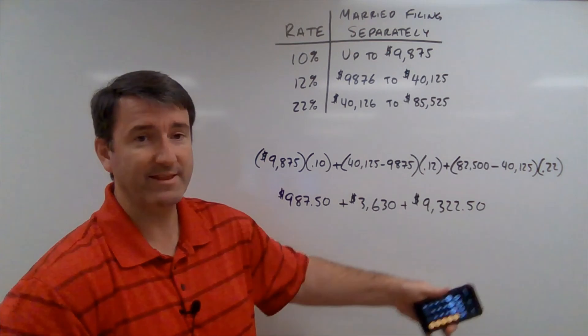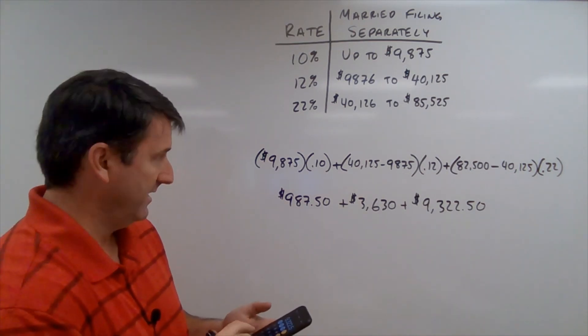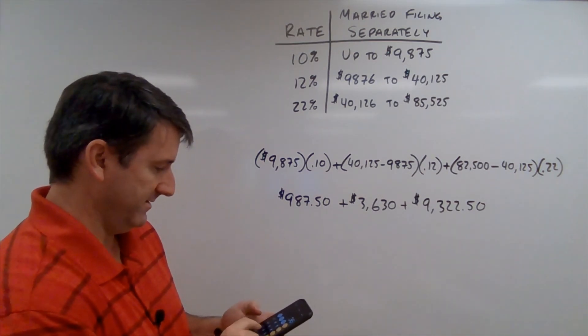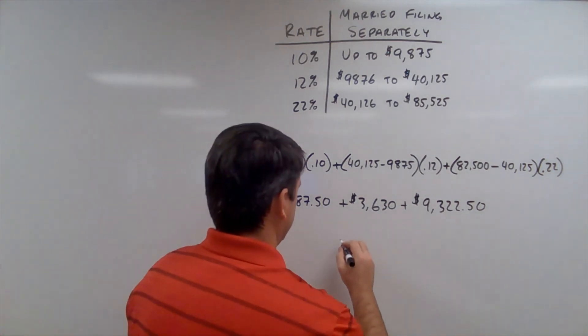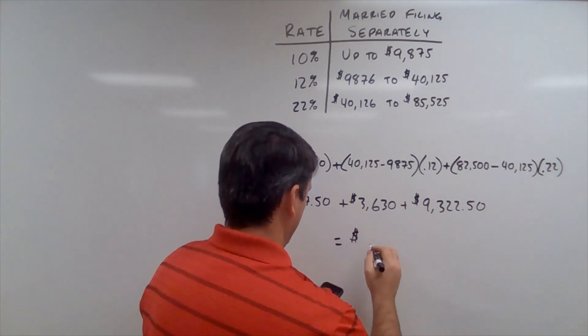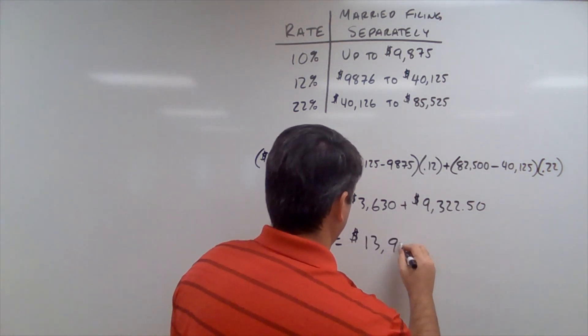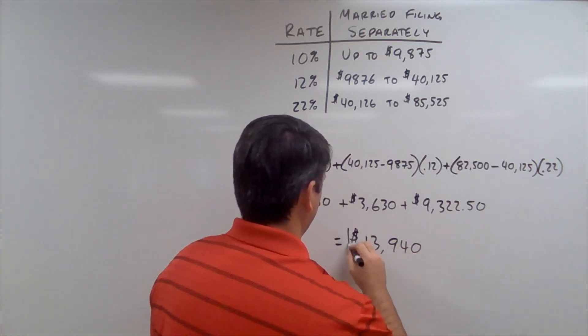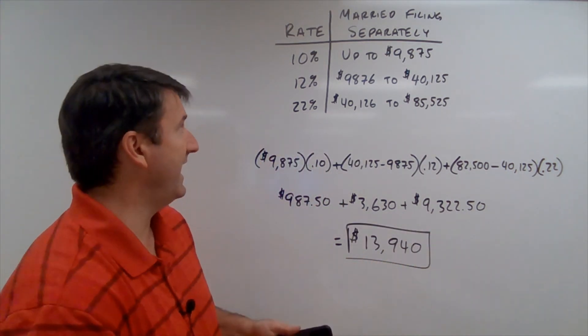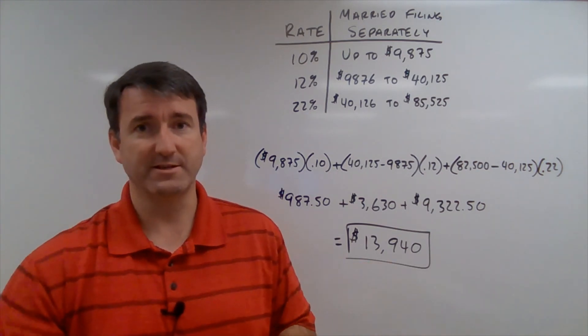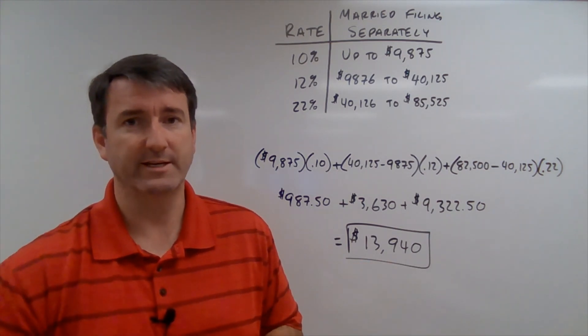And if we add these all together, $3,630 plus $987.50, we get a total tax of $13,940. That's how much tax Jessica is going to have to pay on her $82,500 in taxable income in 2020.